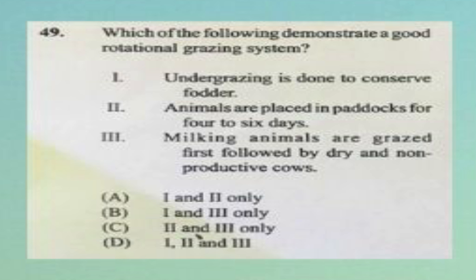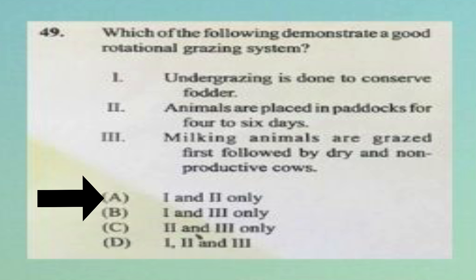Question number forty-nine: which demonstrates a good rotational grazing system? One: undergrazing is done to conserve fodder. Two: animals are placed in paddocks for four to six days. Three: milking animals are grazed first, followed by dry and non-productive cows. A) one and two only, B) one and three only, C) two and three only, D) all three. The answer is A, one and two only.